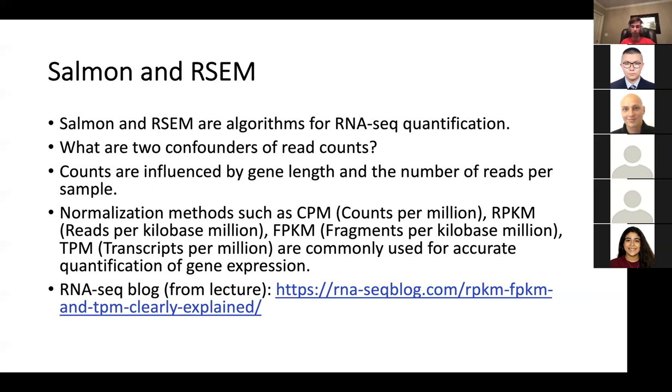Yeah, and then RPKM, you essentially take the counts per million and divide by the length of that gene. TPM reverses the order where first you divide by the length of the gene in kilobases, and then you normalize that per million. Any questions about these four measurements that I can clarify here?